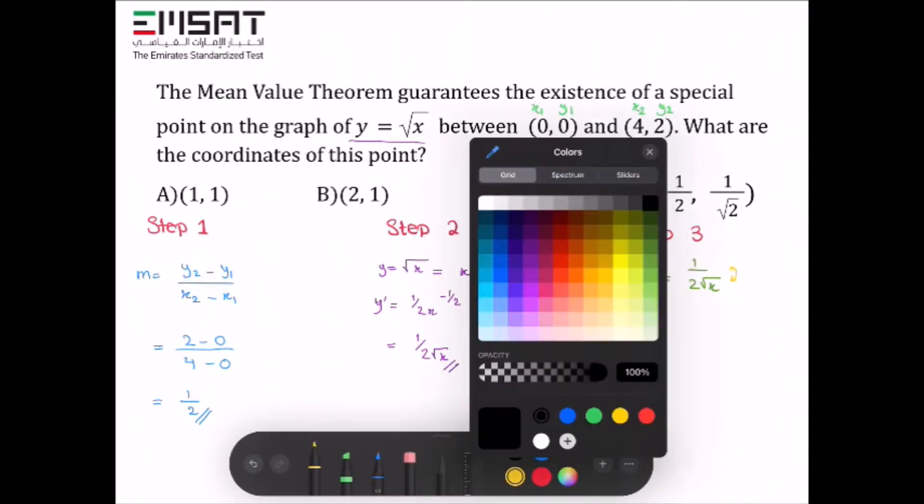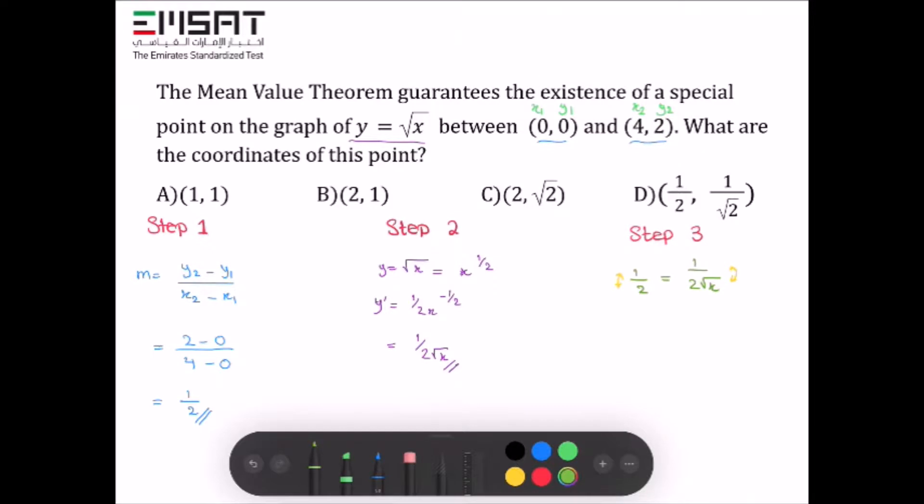To isolate x on one side, divide each side by 2. The 2s cancel out, leaving us with √x = 1.